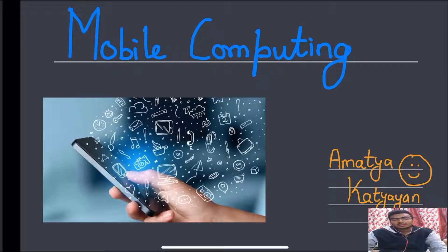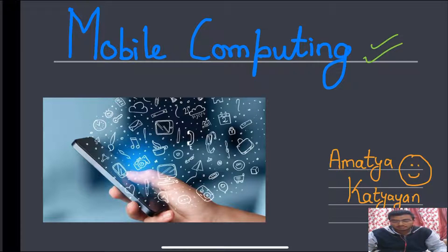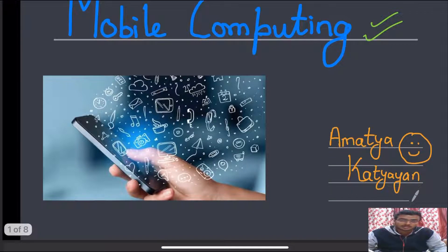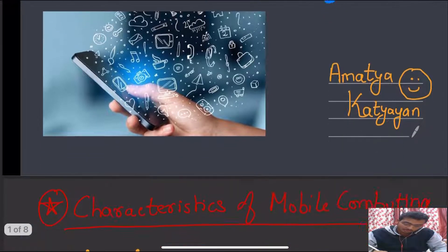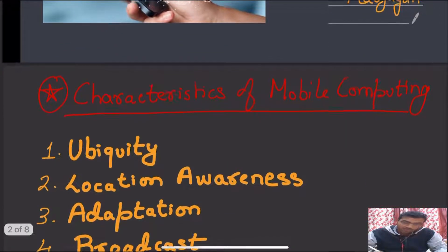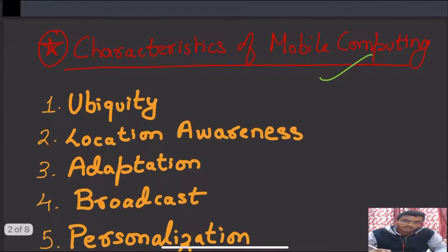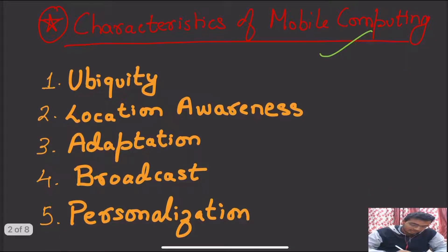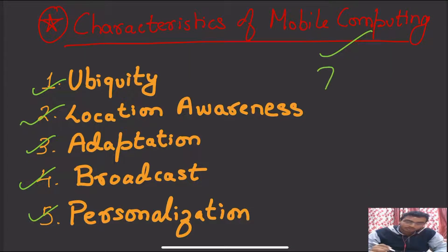Hello everyone. Today we are starting a new series on mobile computing. In the first day, we will look at the main characteristics of mobile computing. There are five main characteristics: ubiquity, location awareness, adaptation, broadcast, and personalization. These are the five main characteristics of mobile computing that we will be seeing in today's lecture in detail.